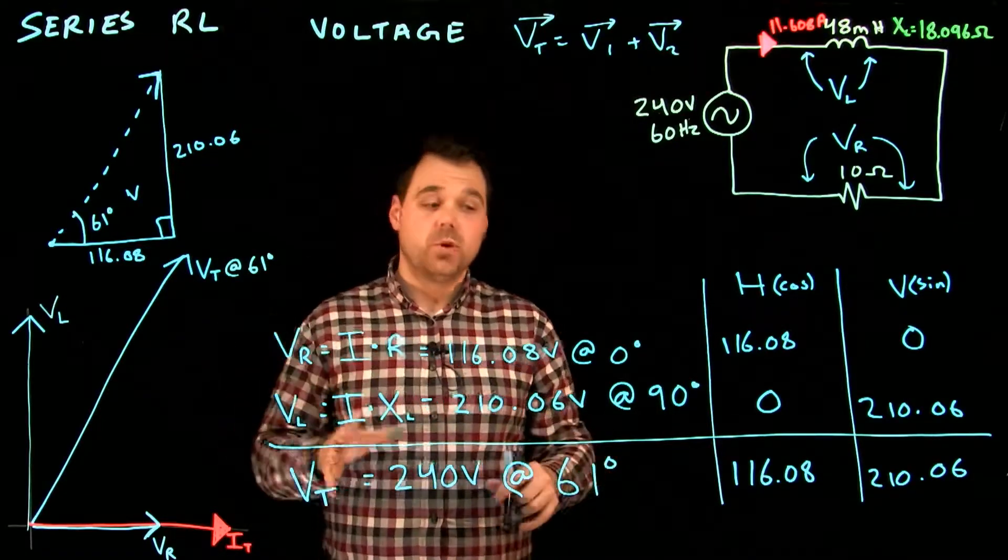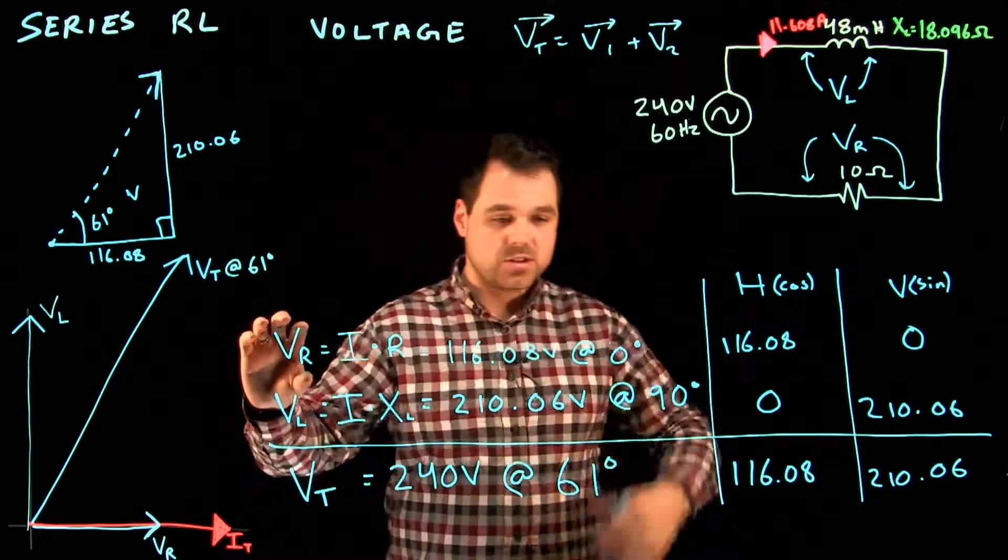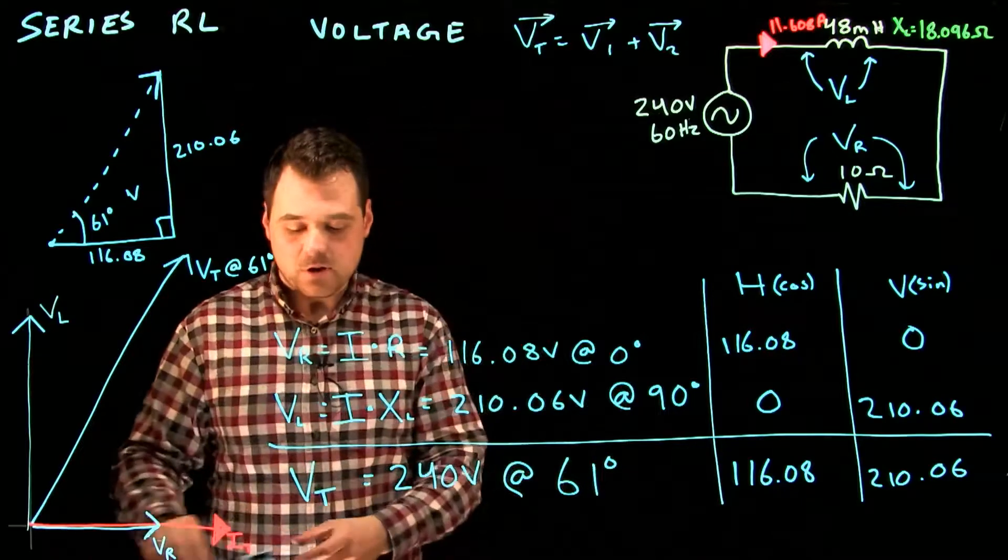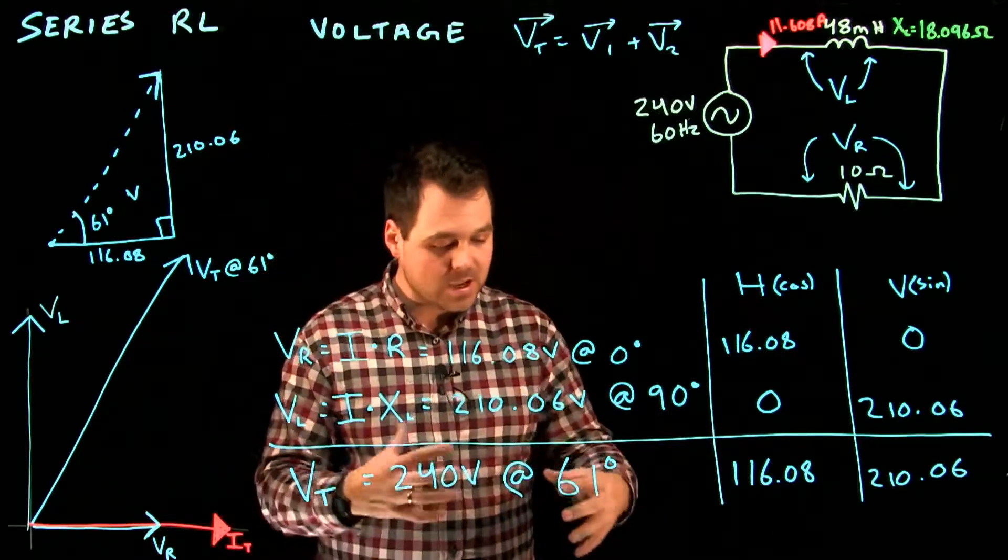So that's what we're going to do with voltage. So now we've just proved that this voltage at zero plus this voltage at 90 equals up to this voltage, and now we've figured out our total.